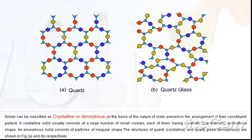The structures of quartz crystalline and quartz glass amorphous are shown in figure A and B respectively.